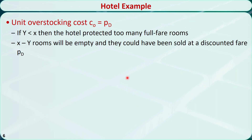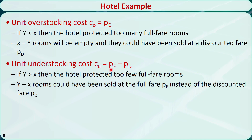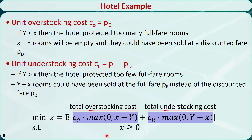The unit overstocking cost CO is equal to PD. If the demand Y is less than x, then the hotel protected too many full fare rooms, and x - Y rooms will be empty — they could have been sold at the discounted fare PD. The unit understocking cost CU is equal to PF - PD. If the demand Y is greater than x, then the hotel protected too few full fare rooms, and Y - x rooms could have been sold at the full fare PF instead of the discounted fare PD. The goal is to find the optimal protection level x* that minimizes the expected total overstocking and understocking costs.